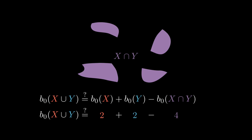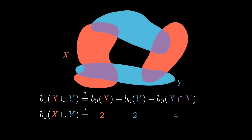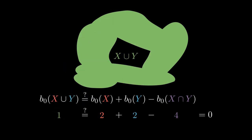Now I am getting worried. The arithmetic here is 2 plus 2 minus 4, which is 0. But looking at X union Y — all the blobs together — we do have one connected component. So inclusion-exclusion has failed. The number of components of the union is not equal to the number of components of X plus the number of components of Y minus the number of components of the intersection. What is going on here? Why is this basic principle of counting failing when we try to count the number of connected components?